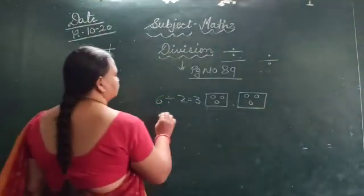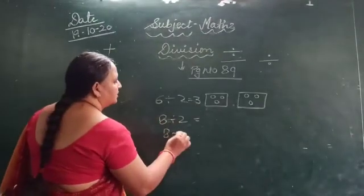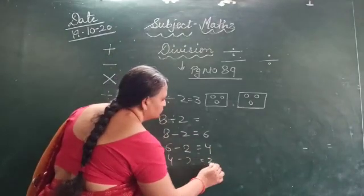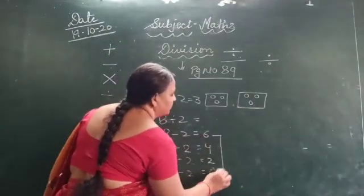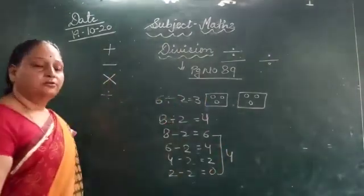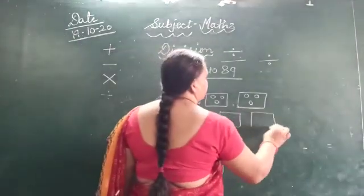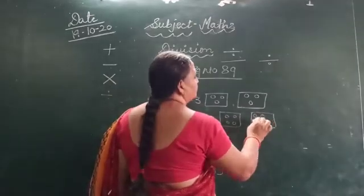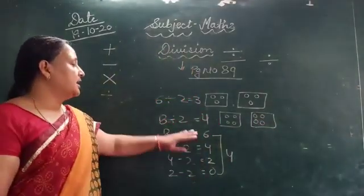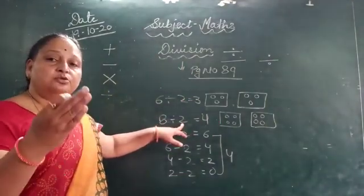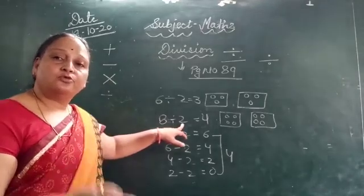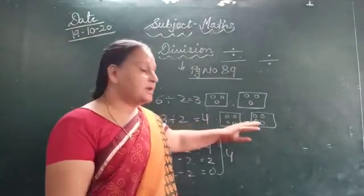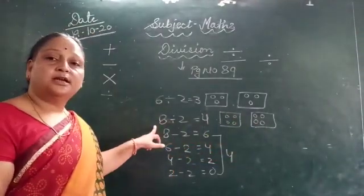Now 8 divided by 2. Using repeated subtraction: 8 minus 2 is 6, 6 minus 2 is 4, 4 minus 2 is 2, 2 minus 2 is 0 — so 4 times, answer is 4. Groups to make: 2. Each group has 4 dots. Using the table for 2: 2 ones are 2, 2 twos are 4, 2 threes are 6, 2 fours are 8 — 4 times. So our answer is 4. We make 2 groups with 4 dots each, and counting all dots gives us back 8.